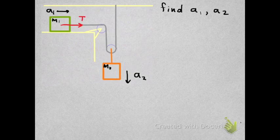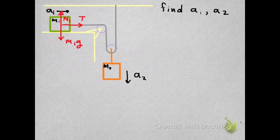So as usual, let's start by drawing the forces acting on the different parts of the system. We have the tension of the rope acting on M1, the weight of M1, and the normal force acting on M1. These are all the forces acting on M1.